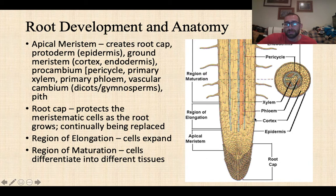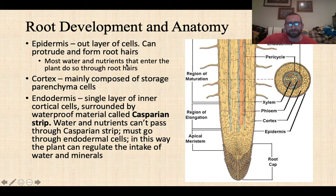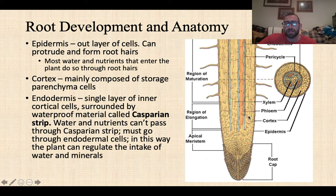On the outside of our root we have the epidermis — a single layer of cells that protects the root and also creates root hairs. Root hairs are really important because they are the primary means by which water flows into the root. Water and nutrients enter the root primarily through these root hairs. Moving inward, the region referred to as the cortex is made up mainly of parenchyma cells acting as storage cells, storing different nutrients.